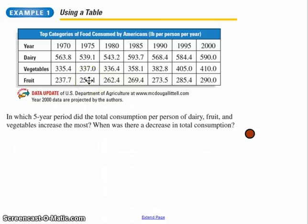Let's actually use the table, as they suggest. In which five-year period, as it asks here, did the total consumption go up the most? And total consumption is of all these things, dairy, fruit, and vegetables combined. And then also, when was there a total decrease in consumption? Hit the pause button, come back, and I'll show you the answers.